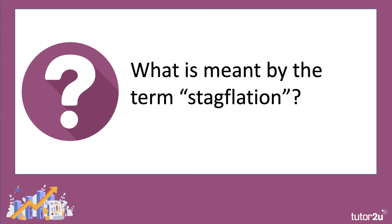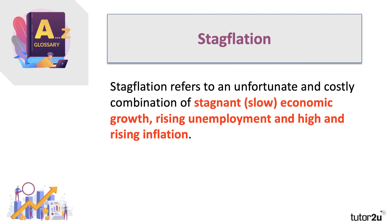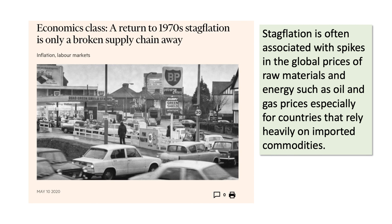So what do we mean by the term stagflation? Stagflation refers to a costly combination of three things: slow growth of GDP, rising unemployment, and high and rising inflation. In a situation of stagflation, it becomes more difficult to manage the economy because, on the one hand, businesses and employees are suffering from slow growth and falling production — meaning less profits and job losses — but at the same time prices are going up, which threatens people's real living standards and can worsen income and wealth inequalities. There is some talk in 2021 of whether there will be a significant return to inflation as the world economy comes out of the pandemic, and we're going to do a separate video on that with a focus on the UK.